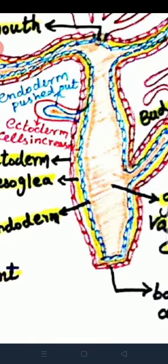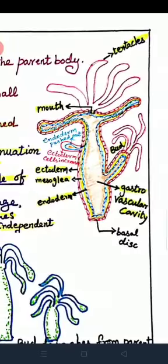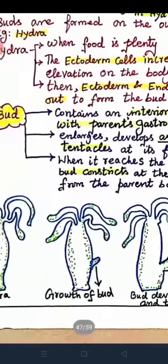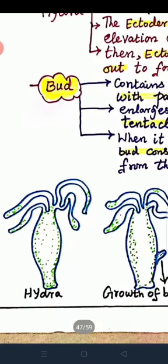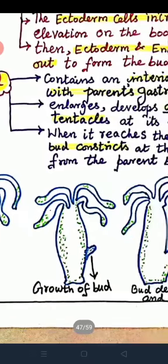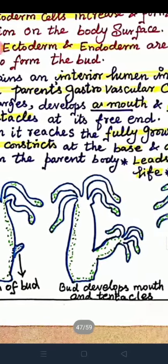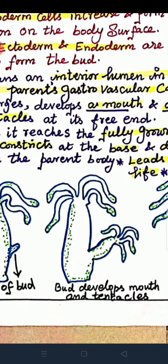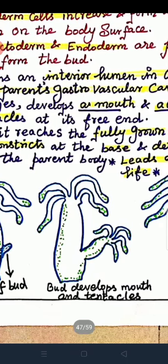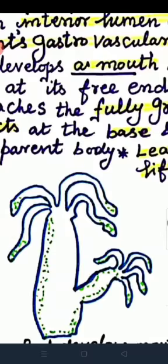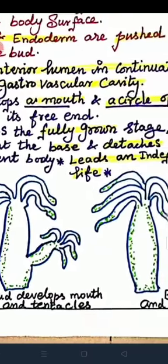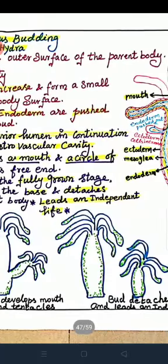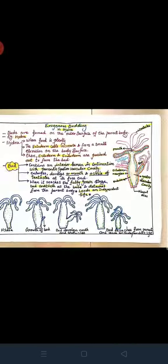The bud enlarges and develops a mouth and a circle of tentacles at its free end. After reaching full growth, the bud constricts and detaches from the parent body, then leads an independent life. This is exogenous budding in hydra.